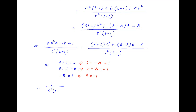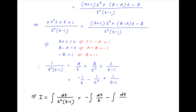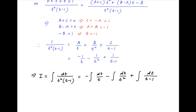Therefore, 1 upon t square times t minus 1 is equal to minus 1 upon t minus 1 upon t square plus 1 upon t minus 1. Therefore, the integral i, which is equal to integral of dt upon t square times t minus 1, can be broken into three components: the first component is minus integral dt upon t, the second component is minus integral dt upon t square, and the third component is plus integral dt upon t minus 1.